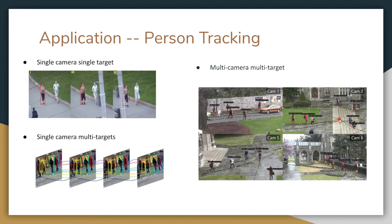Multi-targets rely more on person re-ID, as person re-ID is to tell different people apart. The most challenging and widely used case is multi-camera multi-target. For example, we need to associate the same person from four different cameras, and person re-ID must be used because the trajectory has been lost among multiple cameras. We cannot use motion models alone anymore.